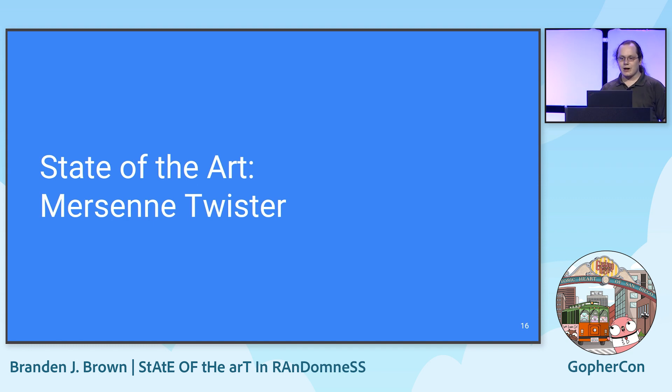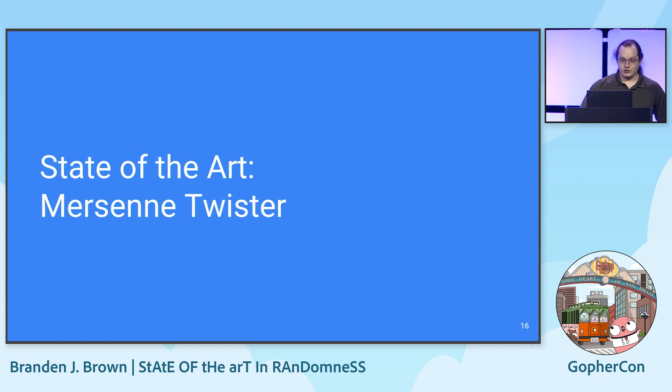Today, if you ask for random numbers in Python, R, Matlab, Microsoft Excel, or dozens of other environments, you're probably using Mersenne Twister.